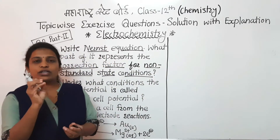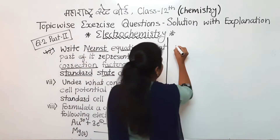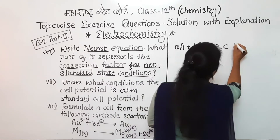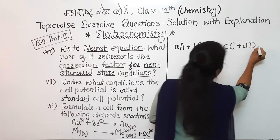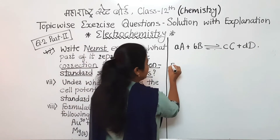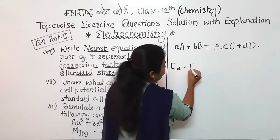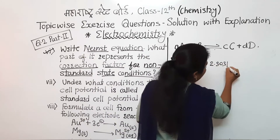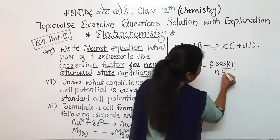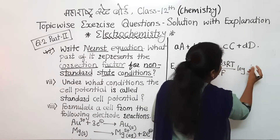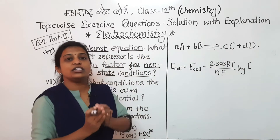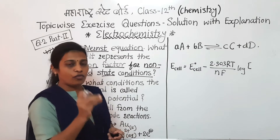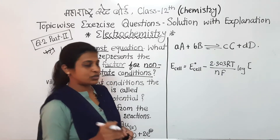Write the Nernst equation and identify what part of it represents the correction factor for non-standard state conditions. Firstly, we should know what the Nernst equation is. If we consider any general reaction: aA + bB gives cC + dD, what is the Nernst equation for that?